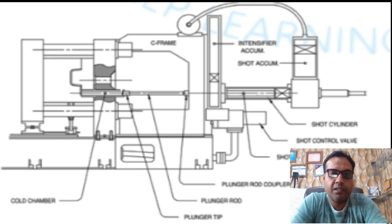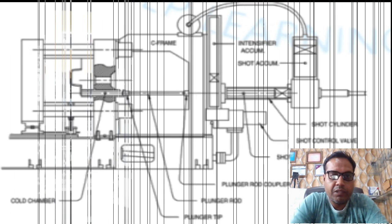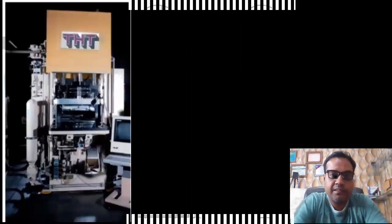The conventional cold chamber short end, you can see in this figure, has the short sleeve at a 90-degree angle from the parting line. The vertical cold chamber machine either has the machine platen and short end rotated vertical as shown in this figure, or has the short sleeve on the parting line.